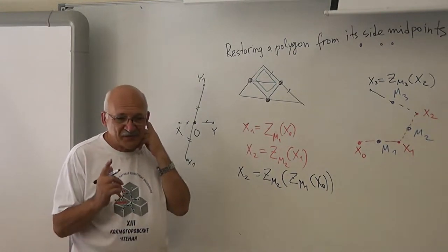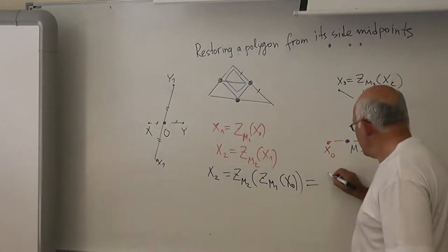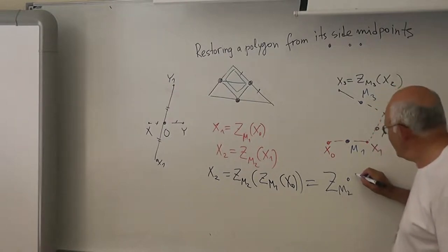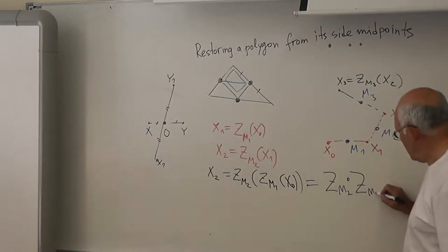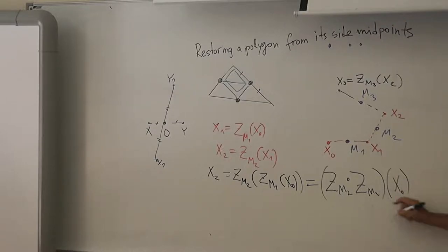I gave you the word. Yes. The notation is Z. Yes. So we can write this: the circle, ZM2 circle ZM1 of X0. Right? Remember? How do you call this? Don't forget. Composition. Composition.